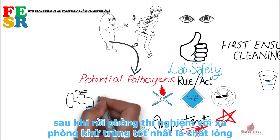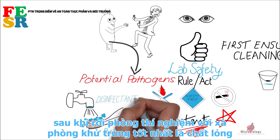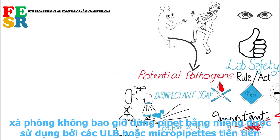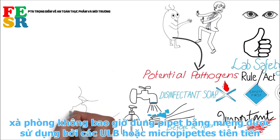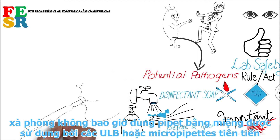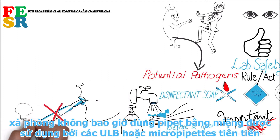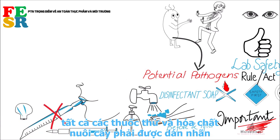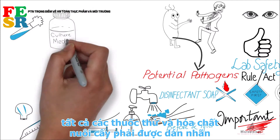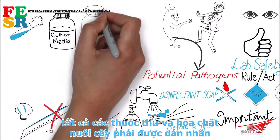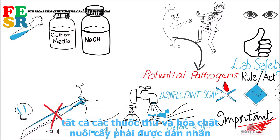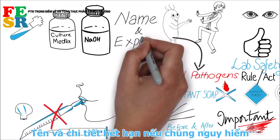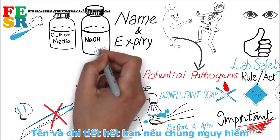Wash your hands before entering and after leaving the lab with a disinfectant soap — preferably a liquid soap. Never pipette by mouth; use bulbs or advanced micropipettes. All cultures, media, reagents, and chemicals must be labeled with their name and expiry details.